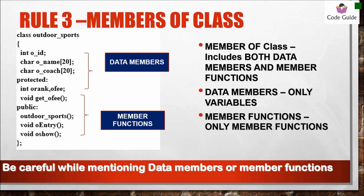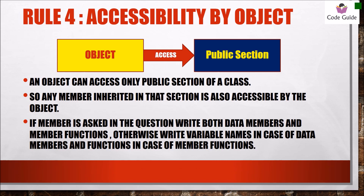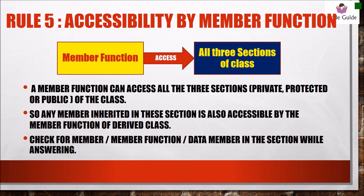In any case, if a member type is asked but none exists, write 'none'. Accessibility by object: an object can access only the public section of the class. So whenever the question asks you to mention members or data members accessed by an object, check only the public section of the class, including derived public functions and the class's own functions.